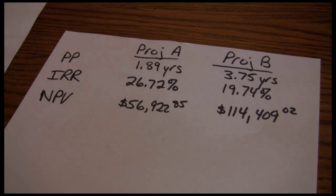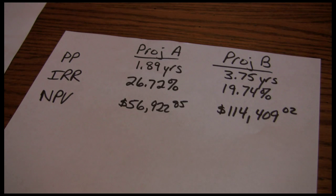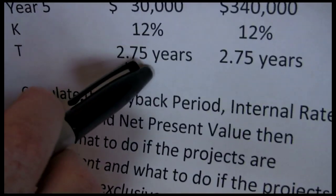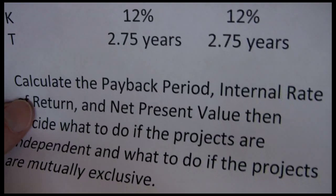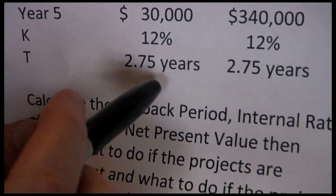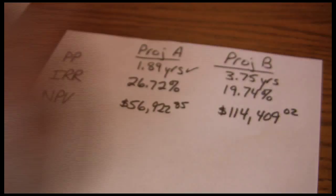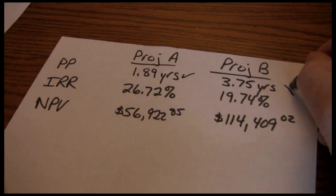Now what we want to do is look at the projects and say if they're independent projects, what should we do? If they're mutually exclusive projects, what should we do? Remember, independent projects means we can take Project A, Project B, both A and B, or neither. Taking Project A does not influence our decision on whether or not to take Project B. In this example, our critical acceptance level was 2.75 years, and the rule for payback period is if the payback period is less than this critical acceptance level, we should accept the project. So Project A is an acceptable project. Project B, according to payback period, is not acceptable.